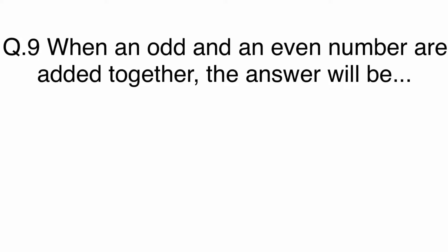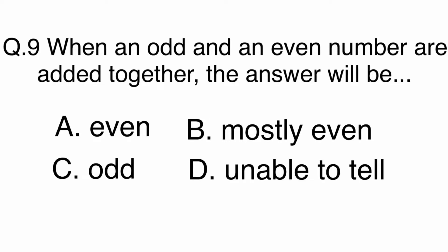Question 9. When an odd and an even number are added together, the answer will be A. Even, B. Mostly Even, C. Odd or D. Unable to Tell.